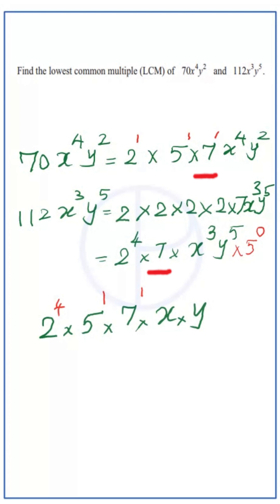For 7, the highest power is 1. For x, the highest power is 4. For y, the highest power is 5. Now multiply together all the distinct factors. 2^4 is 16. 16 times 5 is 80. 80 times 7 is 560.